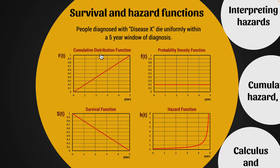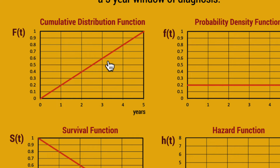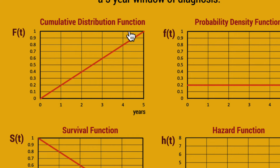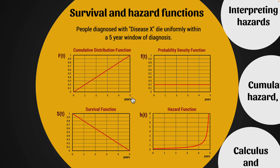People diagnosed with some disease X die uniformly within a five-year window of diagnosis — probably quite unrealistic, but it'll help us understand the relationships between these variables. The cumulative distribution function, F(T), shows that if people are dying uniformly within five years, 20% of people die each year after diagnosis. So after one year, 20% have died — that's 0.2 on the y-axis. After two years it's 0.4, and so on. The CDF starts at zero and finishes at one, meaning 100% of people have died after five years.